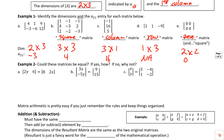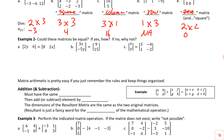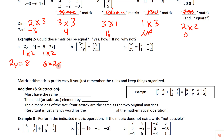Now let's talk about equality in matrices. Matrices can only be equal under certain conditions. Could these matrices be equal, and if so, how? This first pair both have one row and two columns, so they could be equal as long as they're equal element by element. The first row, first column must match: 2y would have to equal 8. The first row, second column must match: 6 would have to equal 2x.